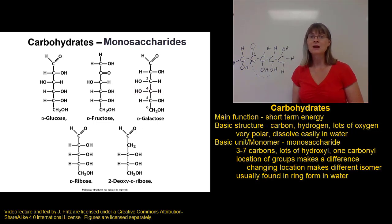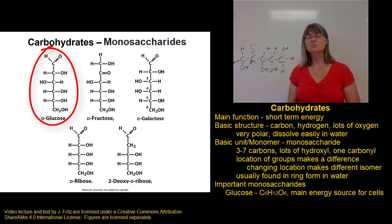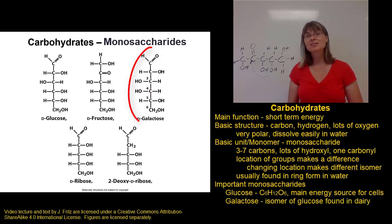There are a few important monosaccharides that I want you to know the functions or importance of, and the first one we've mentioned already is glucose. Glucose is important because it is the most important energy source in your cells. It's also the main component of a lot of more complex carbohydrates that we'll see shortly. The molecular formula of glucose is C6H12O6. The second monosaccharide I want to point out is galactose, and you can see that it has a very similar structure to glucose. Galactose also has a molecular formula of C6H12O6, so that makes it an isomer of glucose. Galactose is an isomer of glucose that our bodies can use for energy, and galactose is a monosaccharide that's found in dairy products and some legumes.